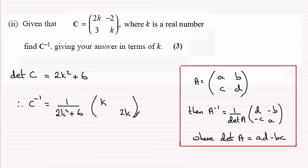That's often called the leading diagonal, and switch the signs on these two elements. So the minus two becomes two and the three becomes minus three. There you go, there's your inverse for C.